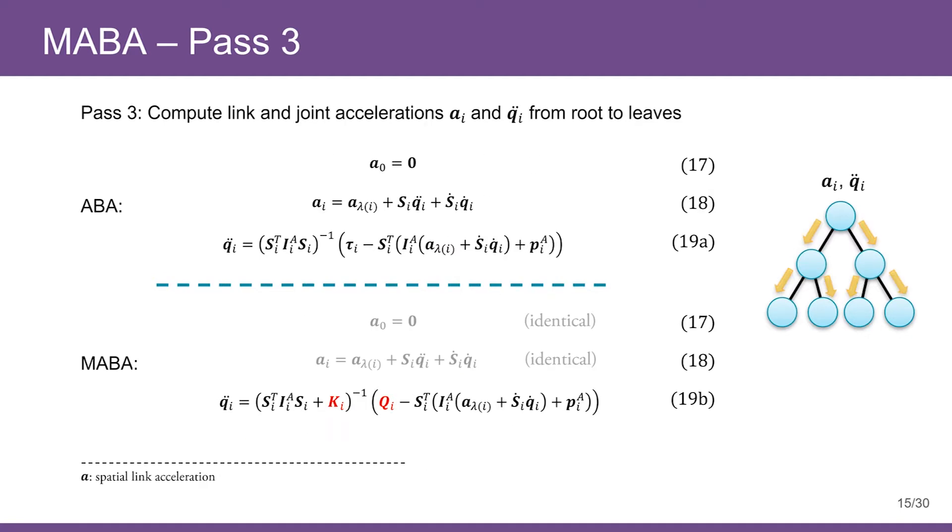In the third pass, we accumulate both link and joint accelerations from root to leaves. The only change in this path is that we need to insert SPD-related quantities into the formula for computing joint accelerations.